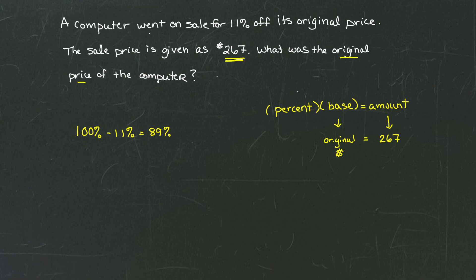Does that make sense? The original price is 100%, but we're discounting 11%. So that means this new price, the sale price, is only 89% of the original price.